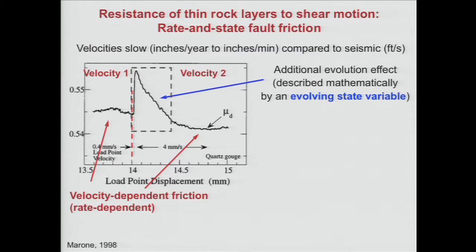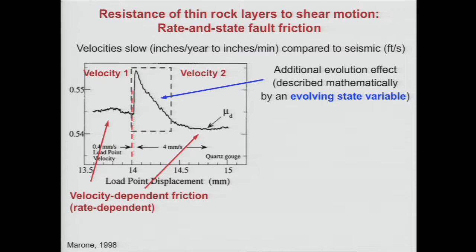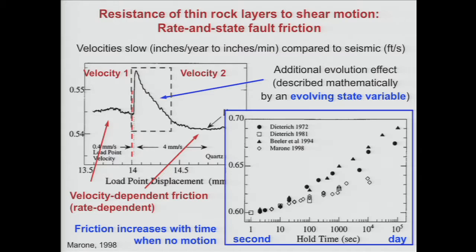There is also a curious evolutionary effect over here, and you need another variable to describe it. State variables were introduced to explain this additional dependence — they are thought to describe how this powder feels at the contacts. There are a bunch of particles contacting over small highly stressed areas, and the state variable describes the population and evolution of those contacts. There is another curious thing: when you just hold your sample compressed with no motion, the friction systematically increases with hold time. Some enterprising people were holding it for a year before doing an experiment, and indeed friction increases with hold time.